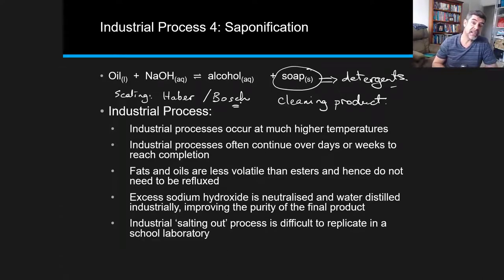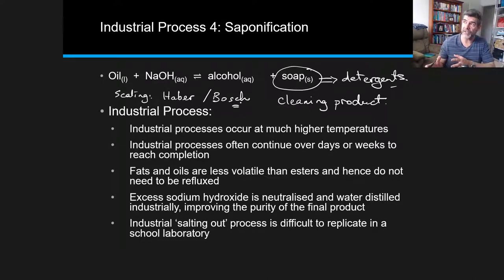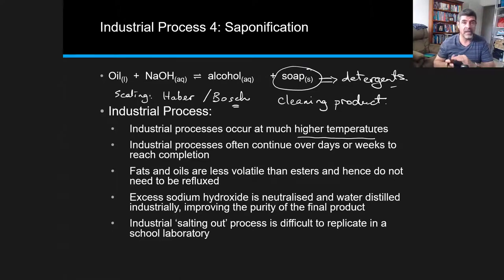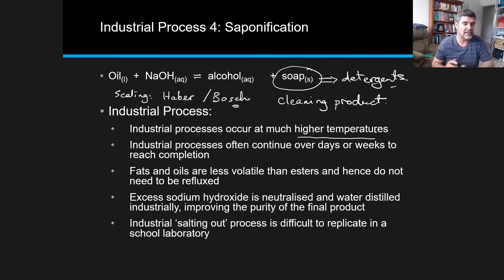The same sort of thing can happen with the process of saponification, where in this case we're looking at soap production and how it might change for an industrial production of soaps, as opposed to just a laboratory demonstration process like the one we used ourselves. So one of the first things we can do is make comparisons about how these processes might look in the lab compared to how they might look at an industrial site.